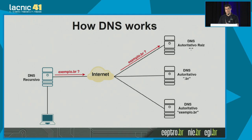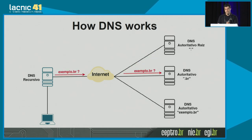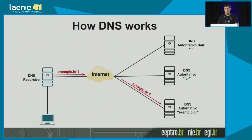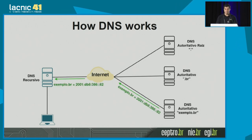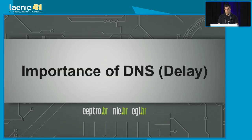The recursive DNS queries the root authoritative DNS asking what the authority is for example.br. The root says it doesn't know, but knows who has that information, and comes back with the authoritative DNS for .br. The recursive DNS then asks authoritative .br who the authoritative for example.br is, and they ask the owner of that information. The authoritative DNS looks up the IPv4 and IPv6 address, returns the address, and the recursive DNS saves it in cache and responds to the user.